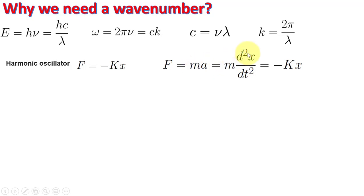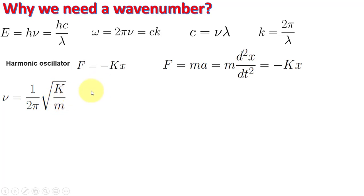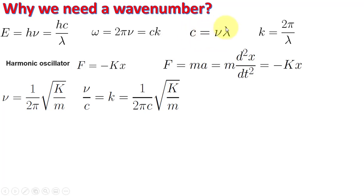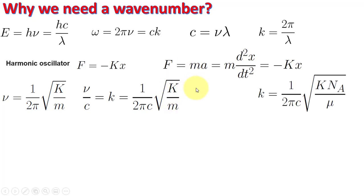From F = ma = m·d²x/dt² = −kx, we derive that the frequency ν = (1/2π)√(k/m). Dividing ν by c gives ν/c = 1/λ, which we define as the wave number k̃ = (1/2πc)√(k/m).